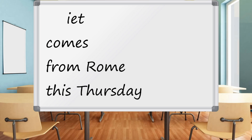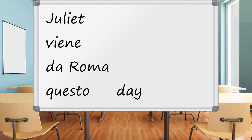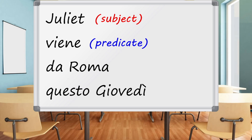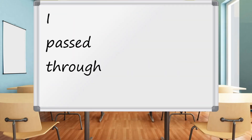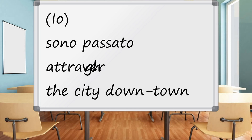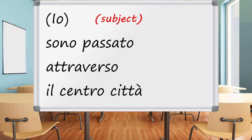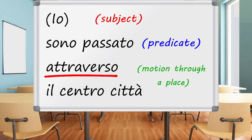Another example: Juliet comes from Rome this Thursday — Juliet viene da Roma questo giovedì. 'Comes from Rome' is motion from a place, moto da luogo. And when will that happen? This Thursday, questo giovedì. I pass through the city downtown — Sono passato attraverso il centro città. 'Attraverso' — through — is a typical preposition that introduces the complement of motion through a place, moto attraverso un luogo, when the action brings the subject to travel through a specific place.